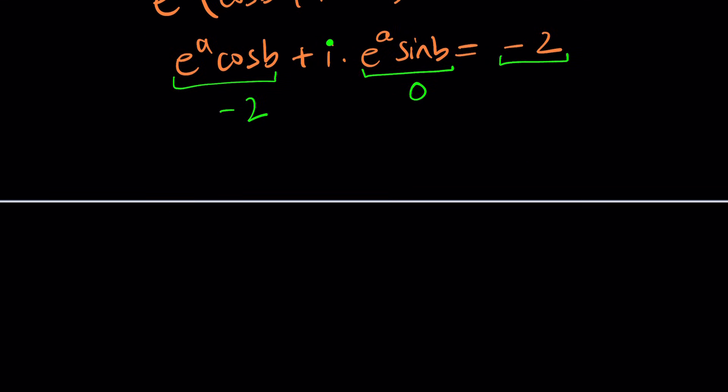That gives us a system of equations. E to the a sine b and e to the a cosine b are given as follows. Now, you can look at it from different perspectives. First one, you can basically think of it as, e to the a sine b is zero. Can one of these be zero? Well, here's the thing. E to the a can never be zero. Why? Because a has to be negative infinity, and that's not a number. That's just a concept, or you can take limits, but we're not talking about limits here.